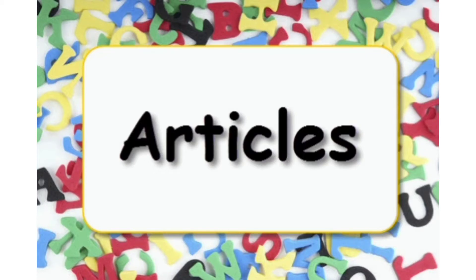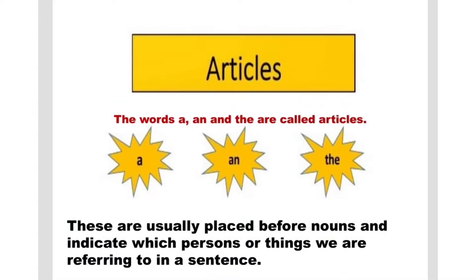Articles. The words a, an, and the are called articles. These are usually placed before nouns and indicate which persons or things we are referring to in a sentence.